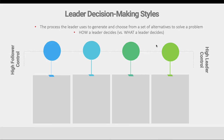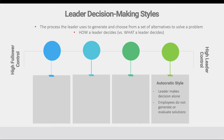We're going to focus on the first of those behaviors, which are called decision-making styles. When we talk about decision-making styles, we're looking at the process the leader uses to generate and choose from a set of alternatives to solve a problem — the way or method a leader goes about trying to solve a problem. We are looking at how a leader decides rather than focusing on the outcomes of those decisions. So we're not asking did they make a good choice — we're looking at what process or style they used to make that decision.